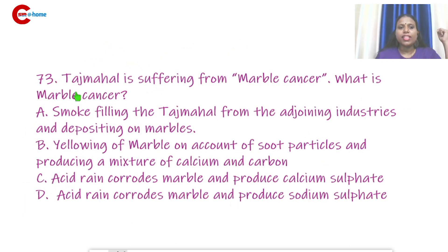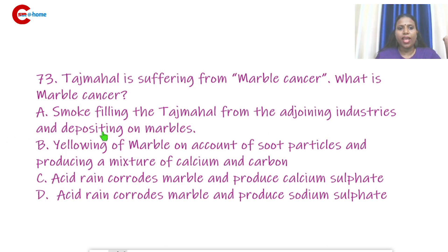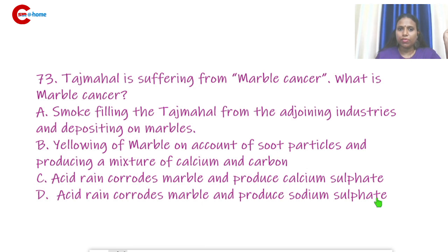Question number 73: Taj Mahal is suffering from marble cancer. What is meant by marble cancer? Option A: Smoke filling the Taj Mahal from adjoining industries depositing on marble. Option B: Blackening of marble due to soot particles producing a mixture of calcium and carbon. Option C: Acid rain corrodes marble and produces calcium sulfate. Option D: Acid rain corrodes marble and produces sodium sulfate. The answer is C.